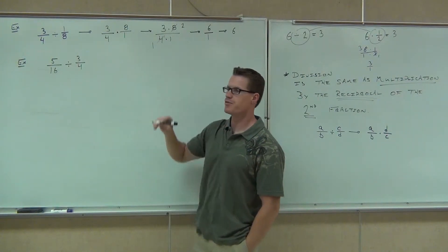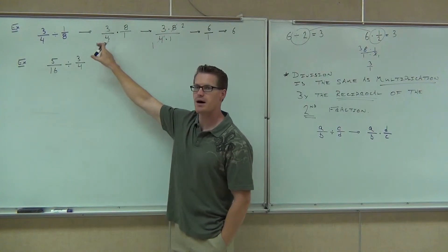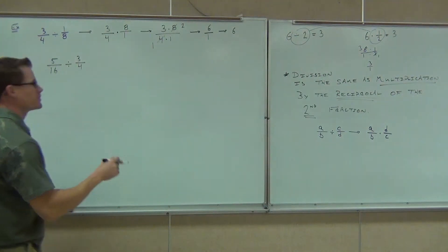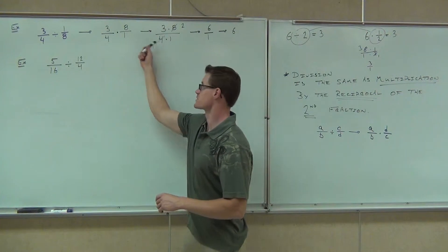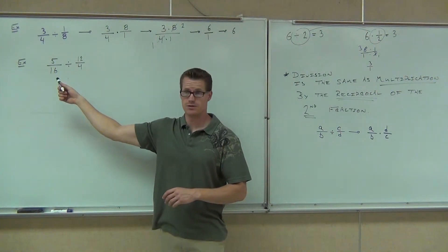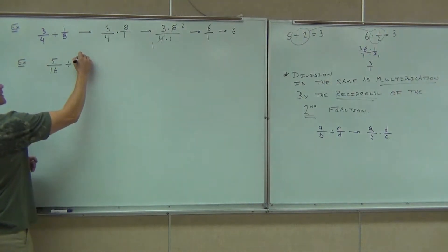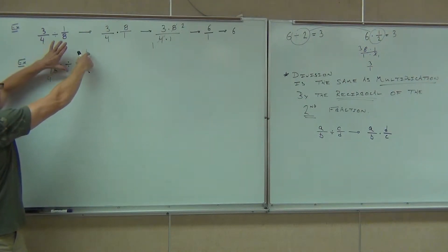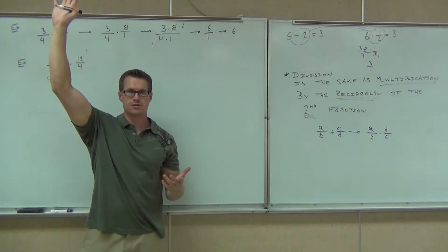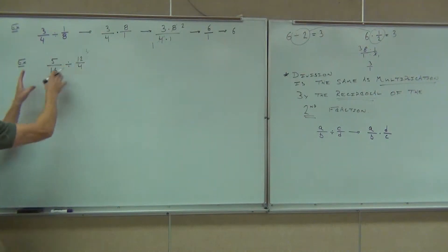The one reason why I have you do this before you simplify is if I let people cross out the eight and the four right now, when they get down to division, a lot of times people make the mistake and do this. I'm going to change the problem just briefly for a second. Let's say that this was something like 12. Could I cross the 12 out with the 16? No. That's the reason why I have you do this is because you cannot do that. You can't do that on division.